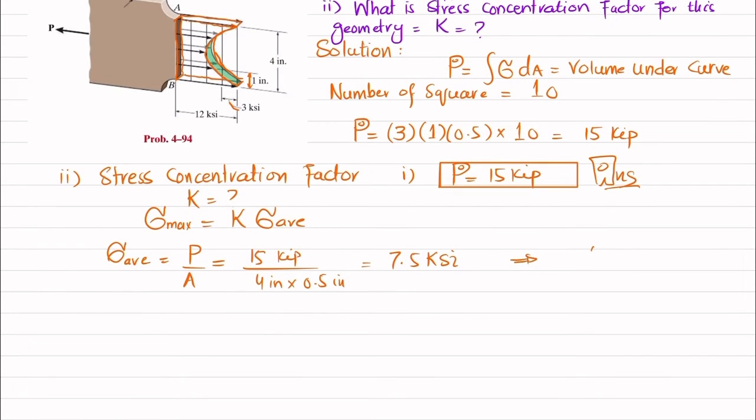So from here, sigma average is equal to 7.5 ksi. So what we are going to do is that we will find this K clear. So how we will find this K?